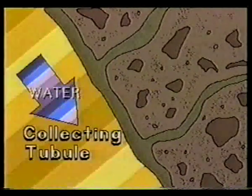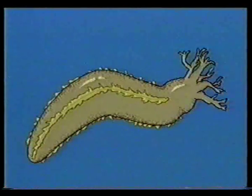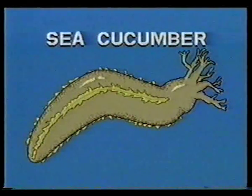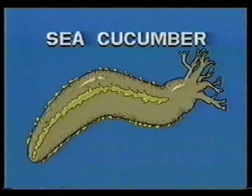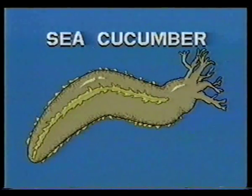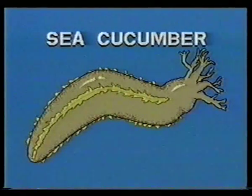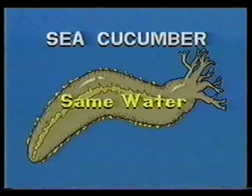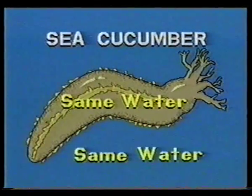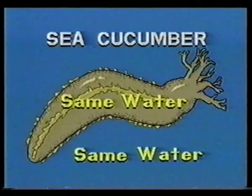Not every organism needs such complex osmoregulation to maintain an inner sea. The concentration of solutes is very similar inside a sea cucumber and outside, so it gets by with direct interchange across its cell membranes.